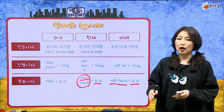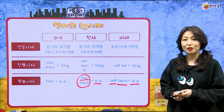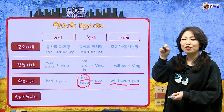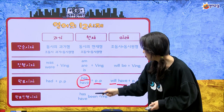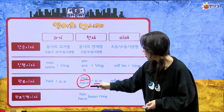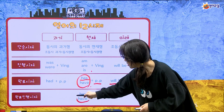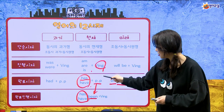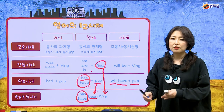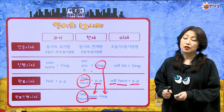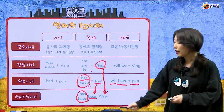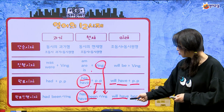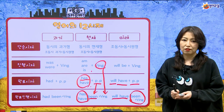9개를 살펴봤고 마지막은 완료 진행 시제예요. 완료 진행 시제는 완료와 진행이 붙어서 진행되는 거죠. 현재 완료 진행은 have/has + been + 동사ing, 과거 완료 진행은 had가 되기만 하면 되고, 미래 완료 진행은 will have been + 동사ing예요. 완료 진행 시제를 과거나 미래로 만들려면 맨 앞의 have/has만 변하면 됩니다.